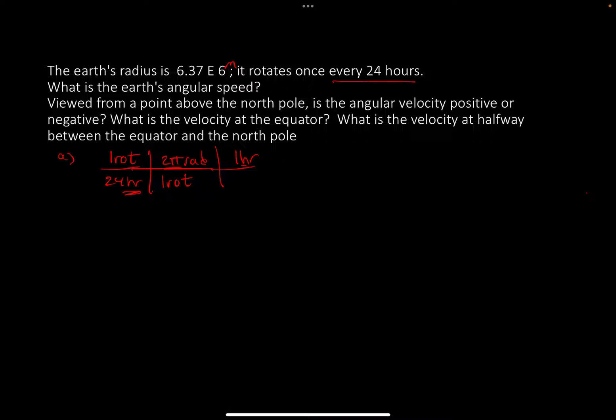Notice this is on the bottom, so I have to put this on the bottom, or the top to reverse it. And that's 3,600 seconds. And when I do the stuff on the calculator, I get it's 7.27 times 10 to the minus 5 radians per second. So that is the angular speed of the Earth.